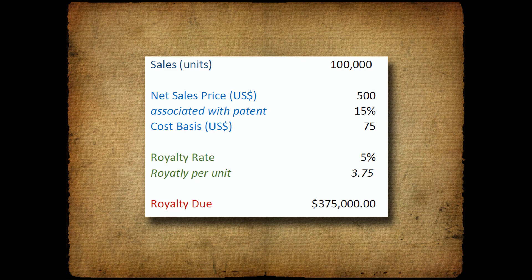I then pick a royalty rate. A lot goes into that number, but in this case I use 5% in the US as an example. In practice, be sure that the royalty rate is less than the profit margin, and consider additional royalties the manufacturer might have to pay — those cumulative royalties should not be higher than the profit margin. The royalty rate times the cost basis results in the royalty per unit, which is a good sanity check number. The royalty per unit times the number of units gives the overall royalty due.